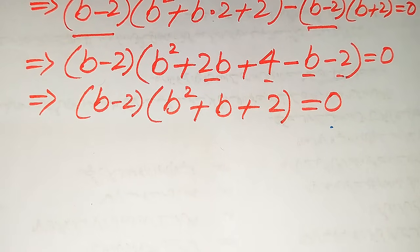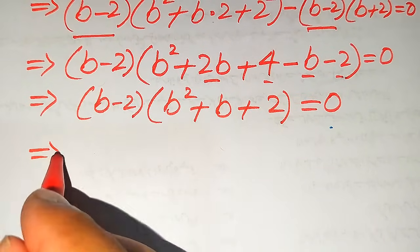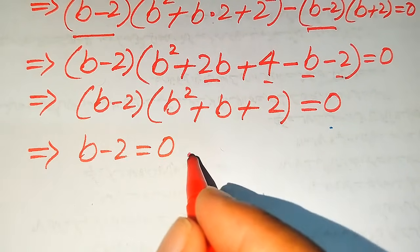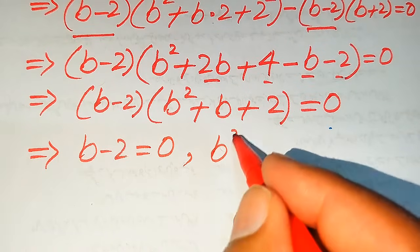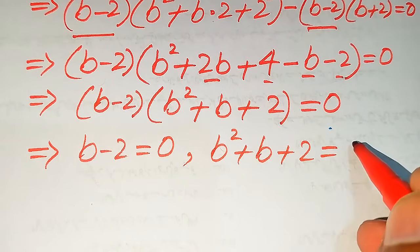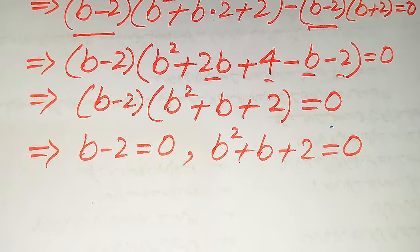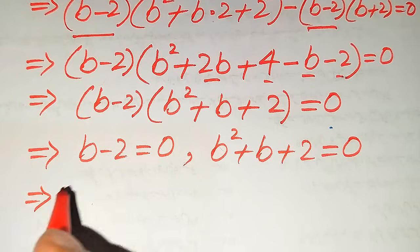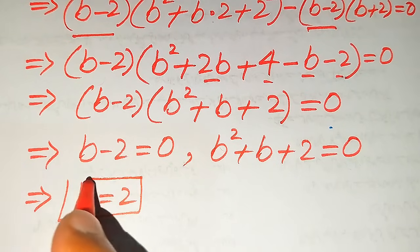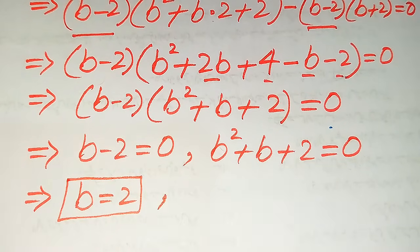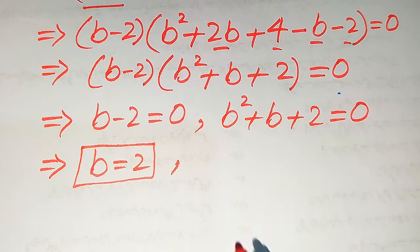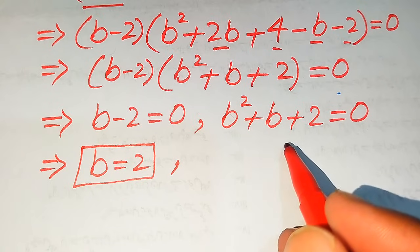We divide this equation into two cases. The first case is b minus 2 equals 0, and the second case is b squared plus b plus 2 equals 0. From the first case we easily get b equals 2, which is the first real solution of the given equation. To find the other solutions we need to solve this quadratic equation.